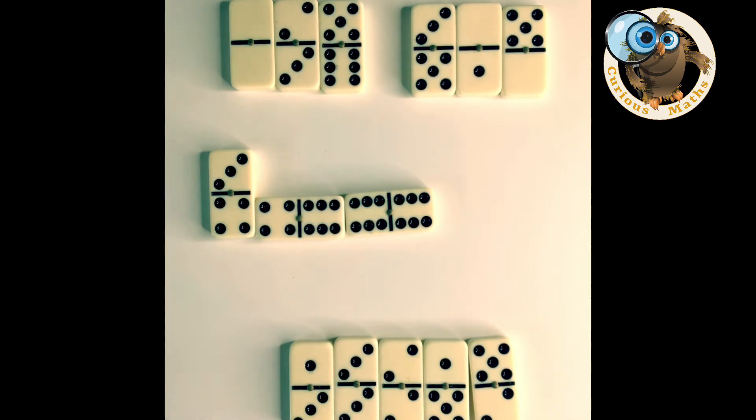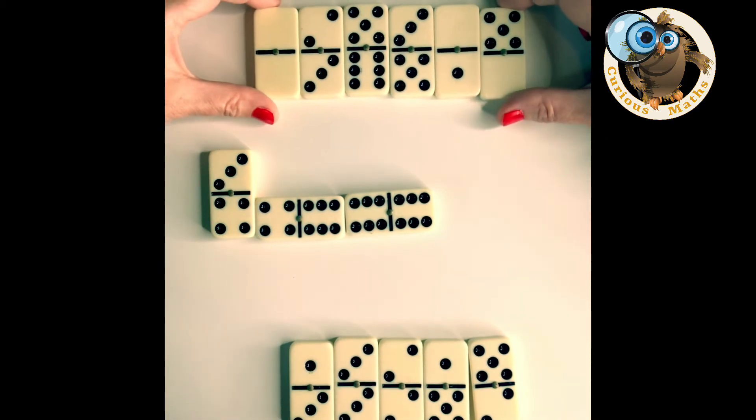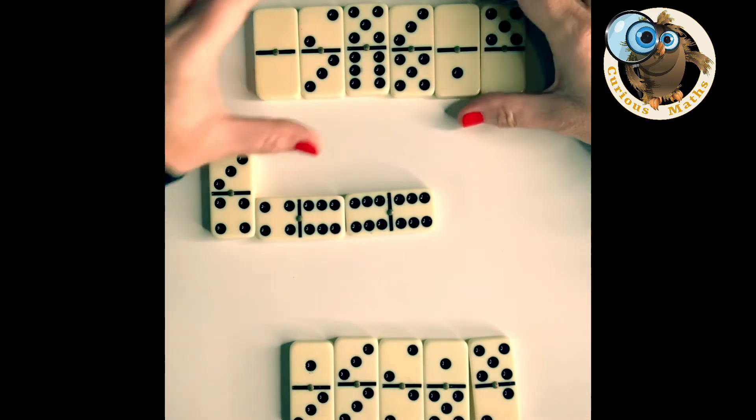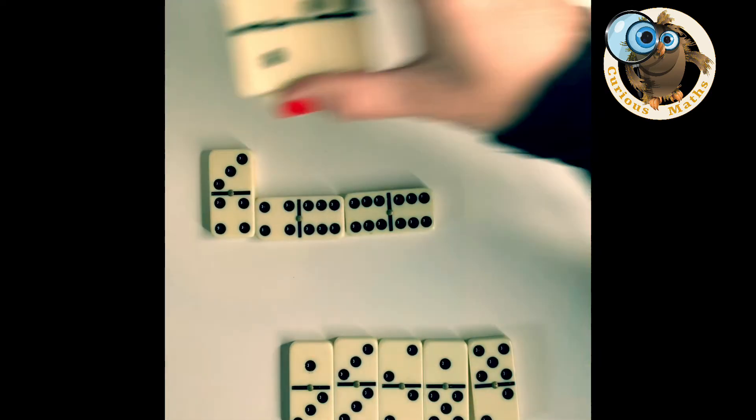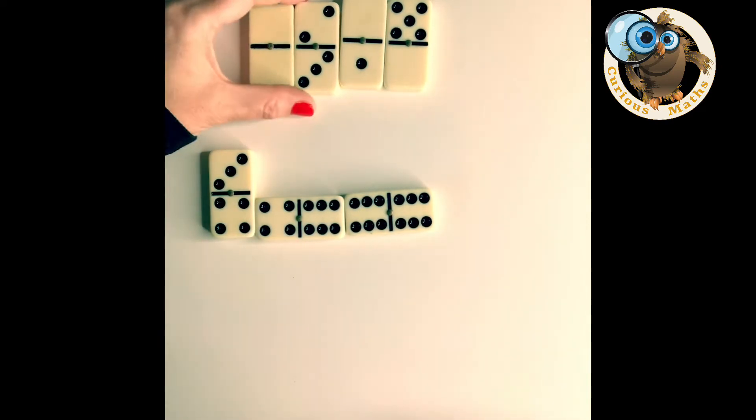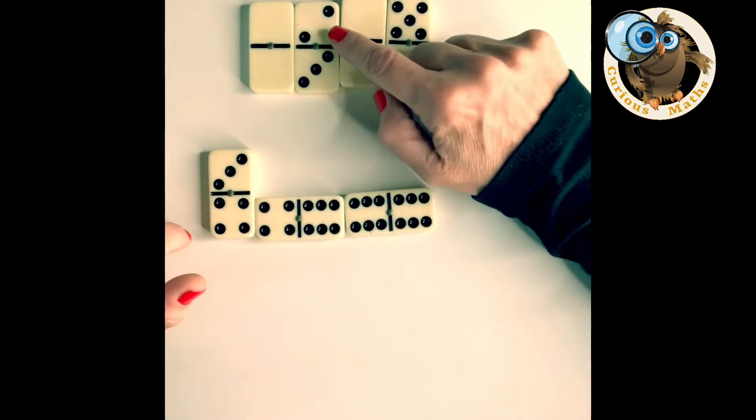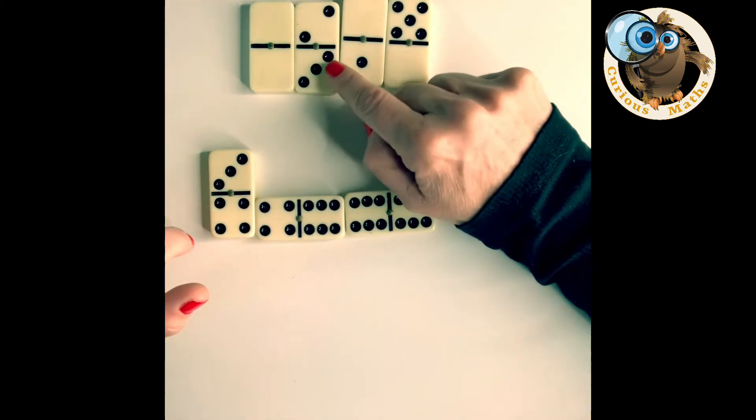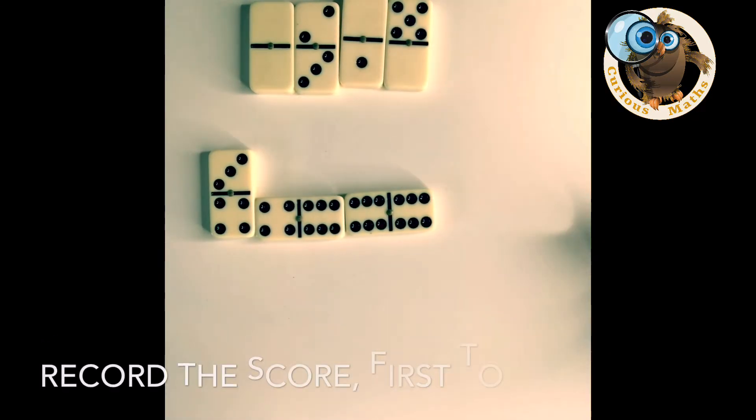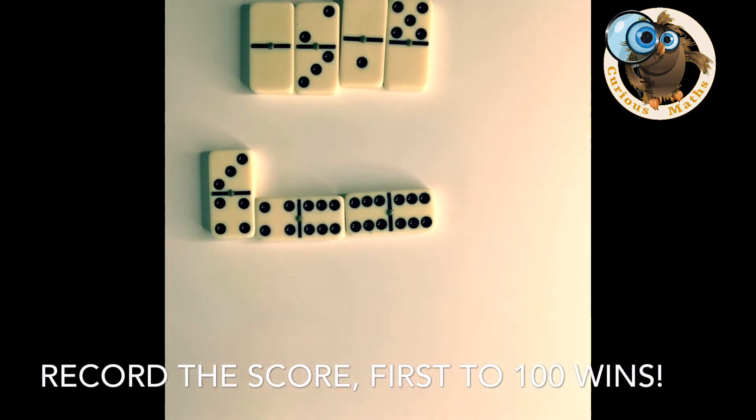So the winner is the person who gets rid of all their tiles and then this is the good bit. So their points are scored by the number of pips left from the other opponents. So let's just say this opponent had these dominoes left when I got rid of all mine, then what they need to do is add up the pips and I would score it. So we got five plus two is seven plus one is eight, nine, ten, eleven, so I would score eleven points from that player and obviously if there were more players I score more. It's a good fun game, have a go.